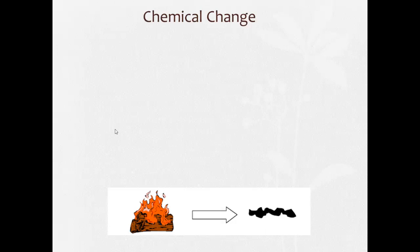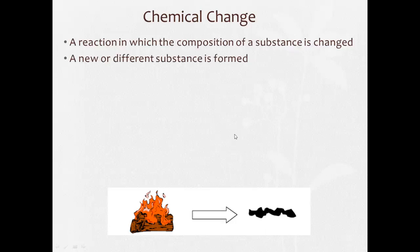Chemical change, on the other hand, is a reaction in which the composition of a substance is changed. What it's made of gets changed during the chemical change. And during it, a new or different substance is formed. For example, rusting. When metal rusts, it's actually changing from the metal to rust.